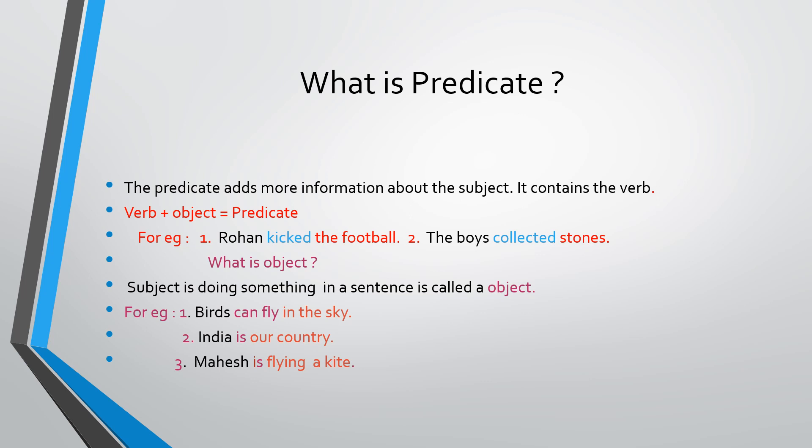'India is our country.' India is the subject. 'Is' is the verb. 'Our country' is the object — ask what is India? Our country. So verb plus object becomes a predicate. 'Mahesh is flying a kite.' Mahesh is the subject, 'is flying' is the verb, and the kite is the object — what is Mahesh flying? Kite. Kite is the object of the subject. Verb plus object becomes a predicate. It is very simple.